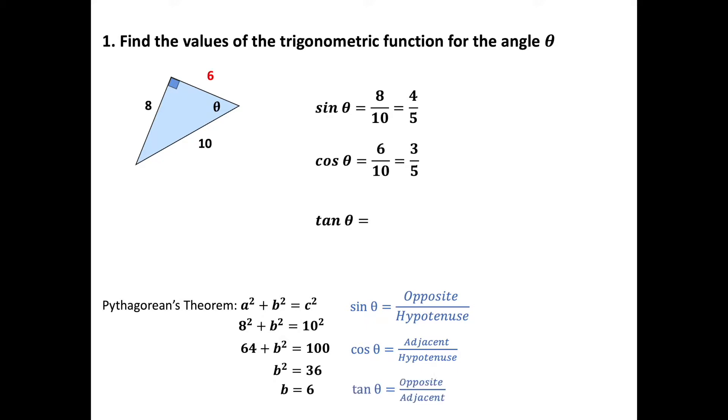Tangent is the opposite side divided by the adjacent side. Opposite side is 8, adjacent side is 6. We've got 8/6 which can be reduced to 4/3.